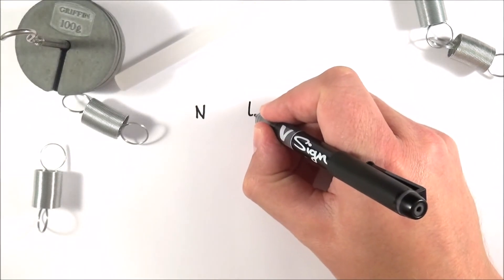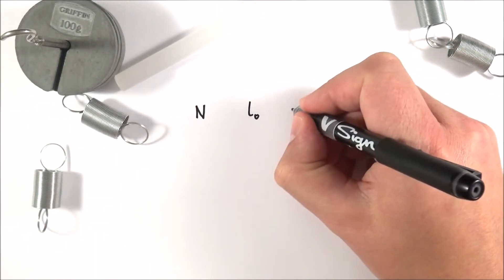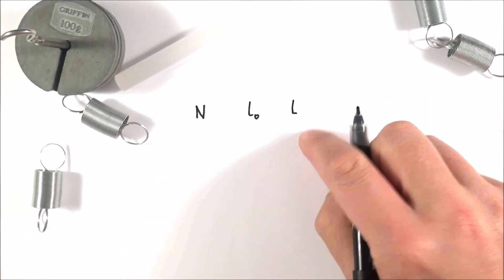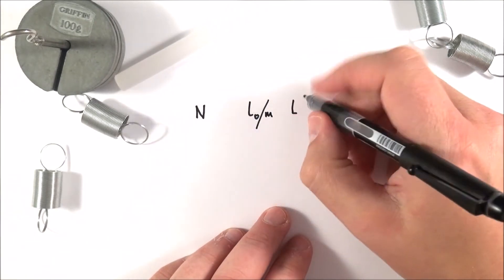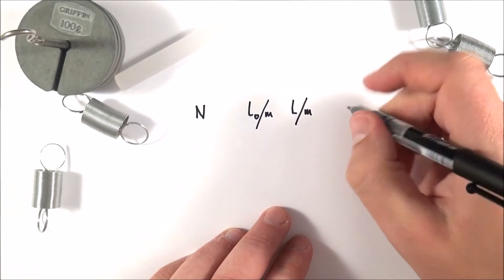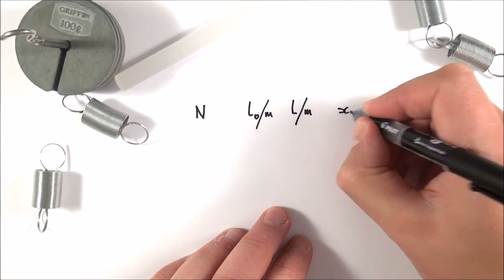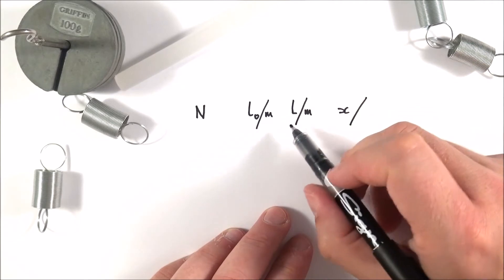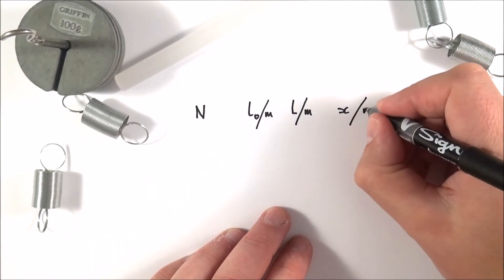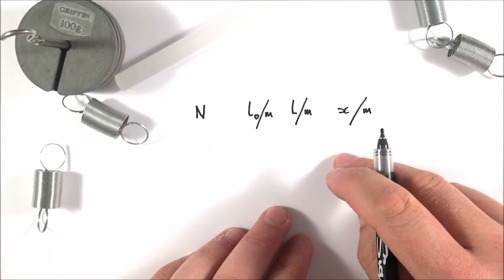The original length which is maybe l naught, and then the final length which we often call l, and both of these, it's best practice to record in meters. And then what we're going to look at is the extension which is just the final length minus the original length, again measured in meters.